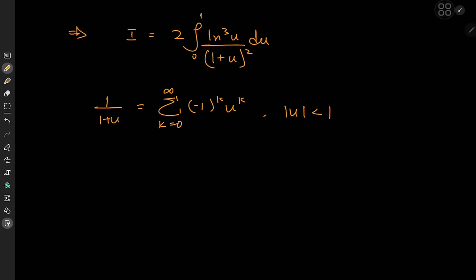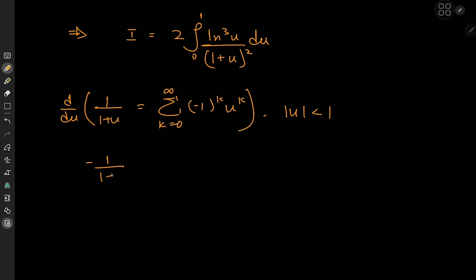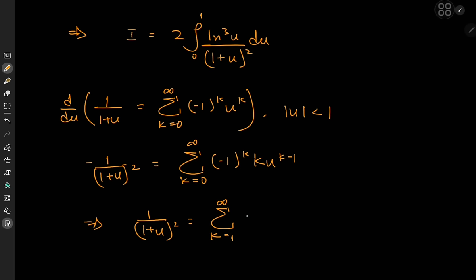To get the series for 1/(1 plus u)², we use calculus: differentiate both sides with respect to u, giving −1/(1 plus u)² equal to the sum over k of (−1)^k times k times u^(k−1). Multiplying through by −1, we get 1/(1 plus u)² equals the sum over positive integers k of (−1)^(k−1) times k times u^(k−1), since the k = 0 term vanishes.